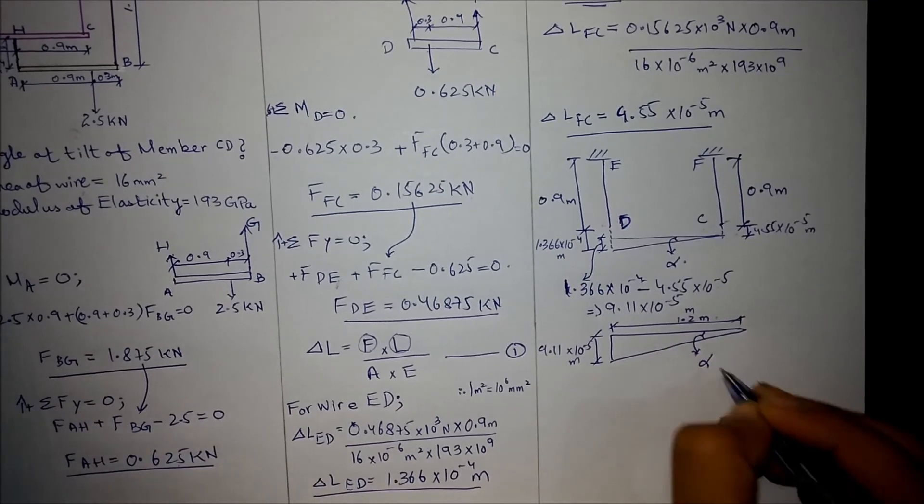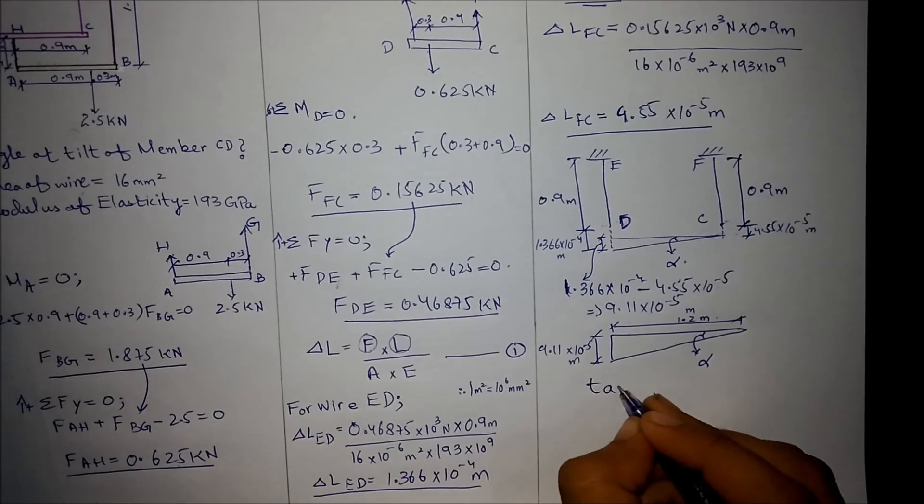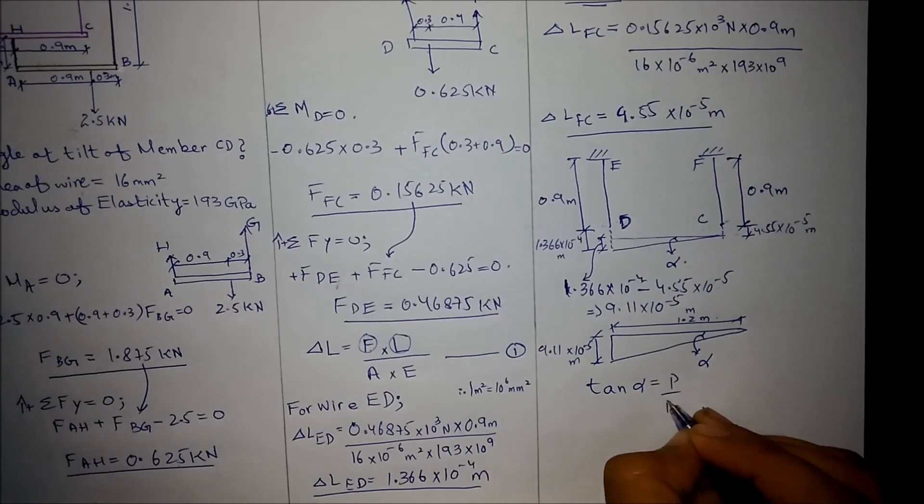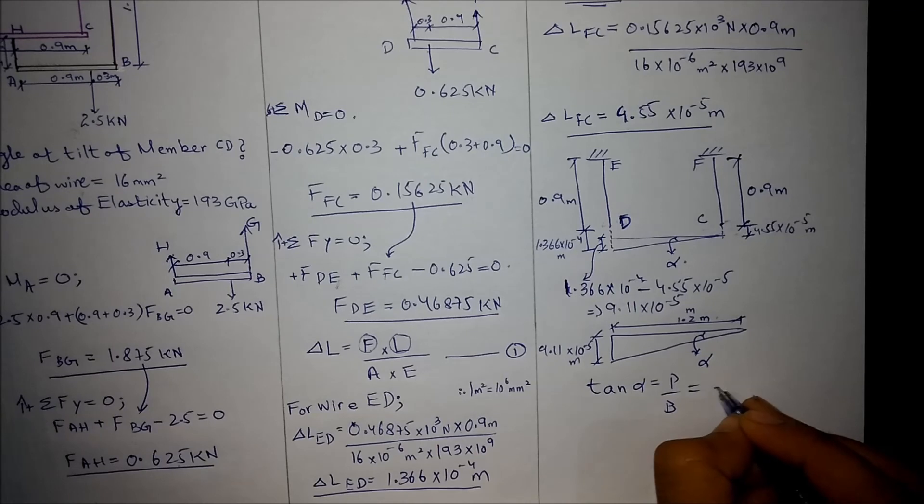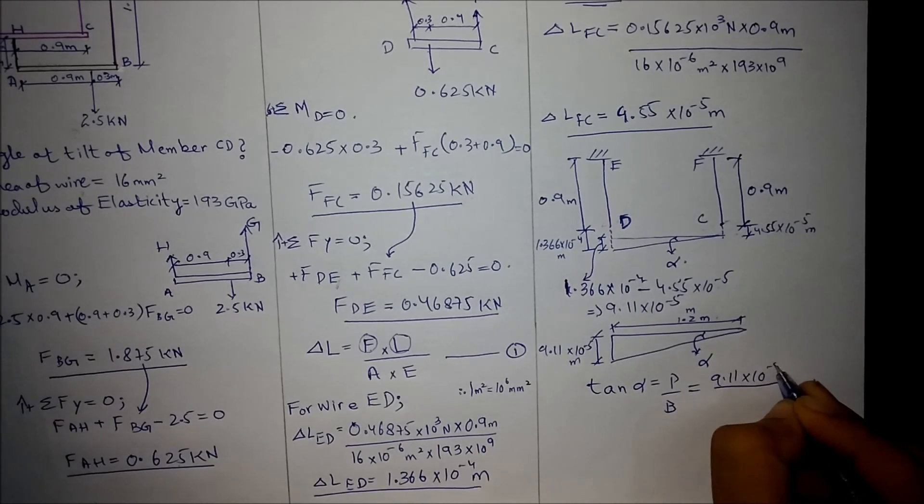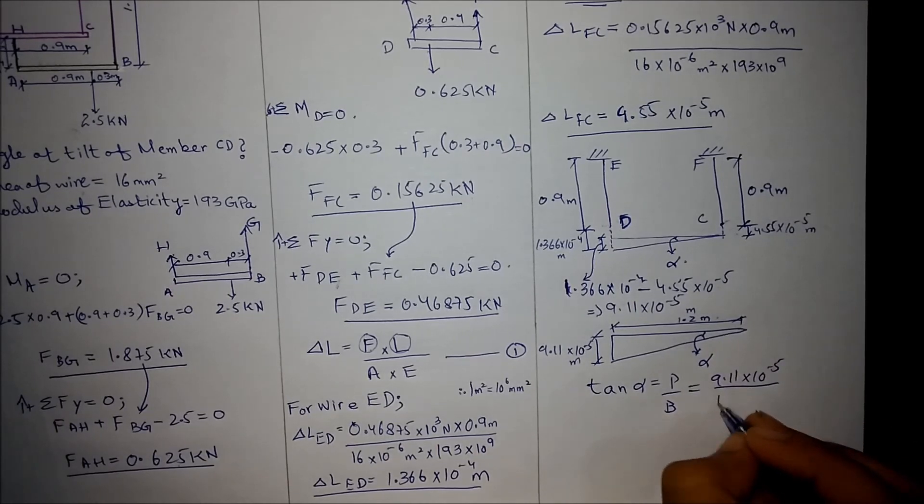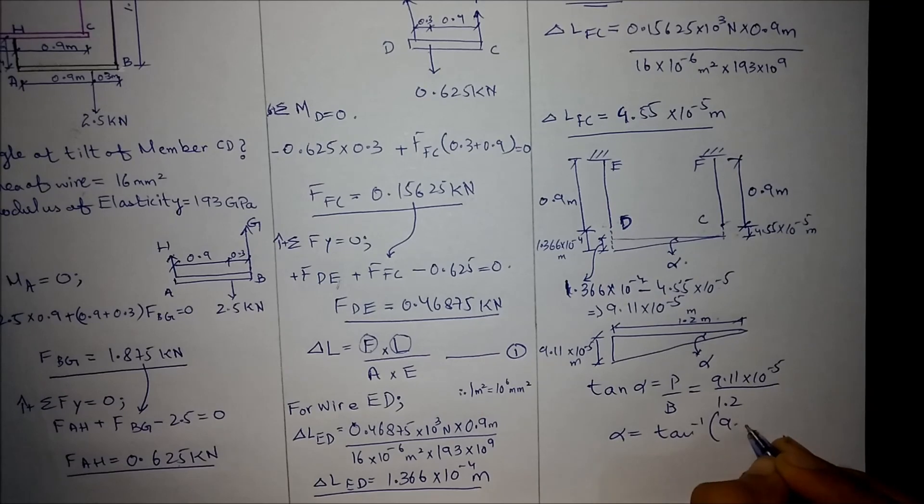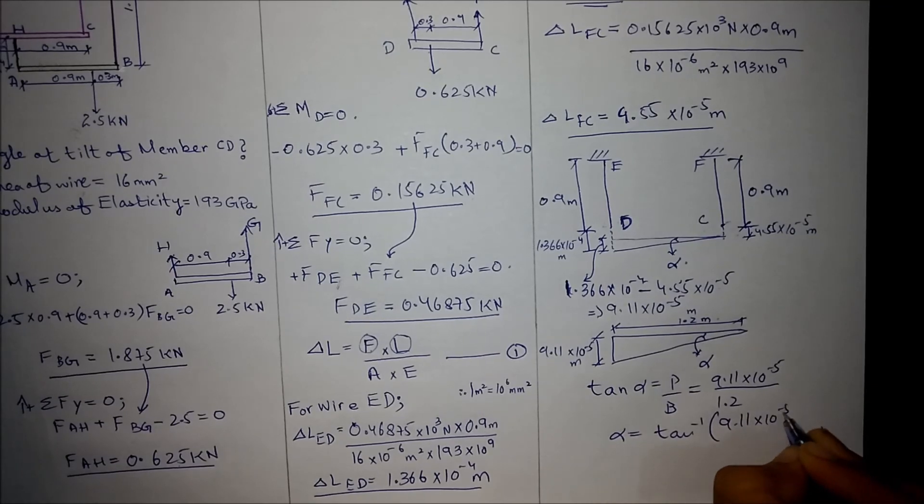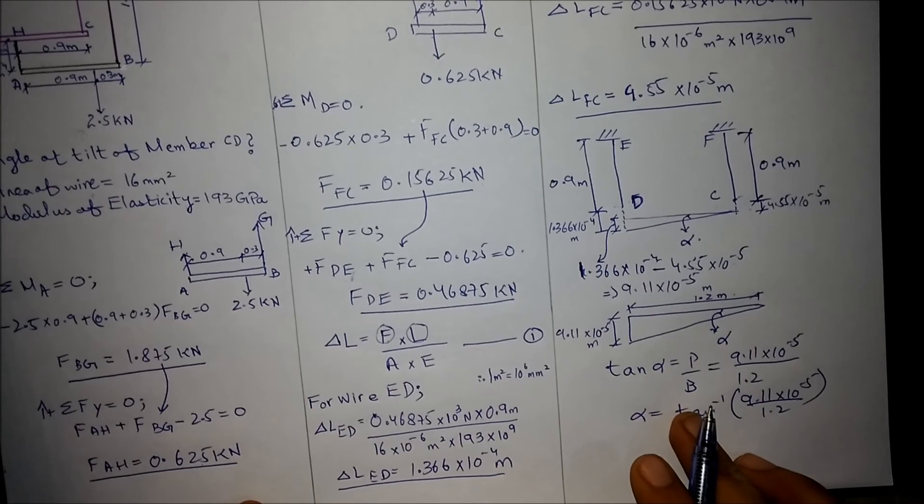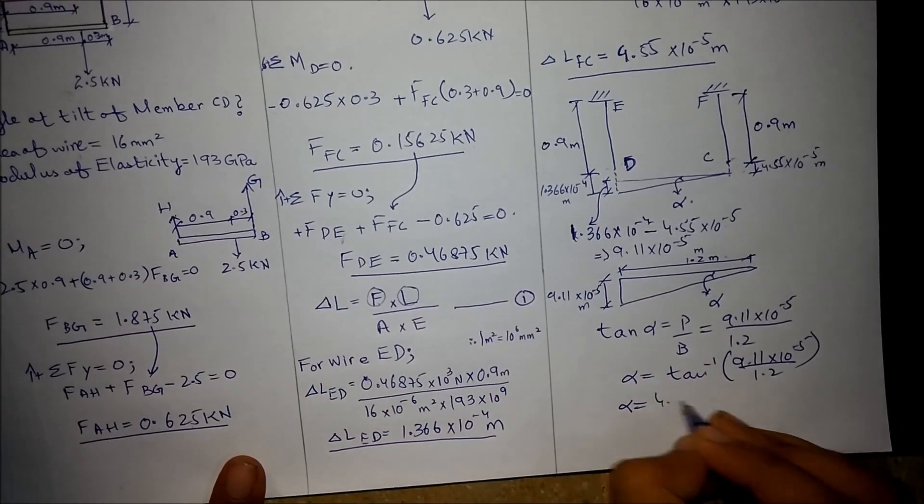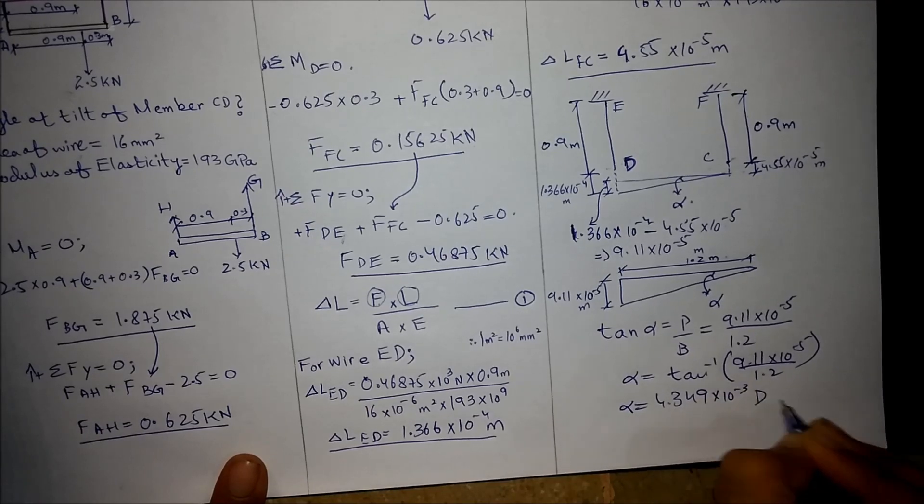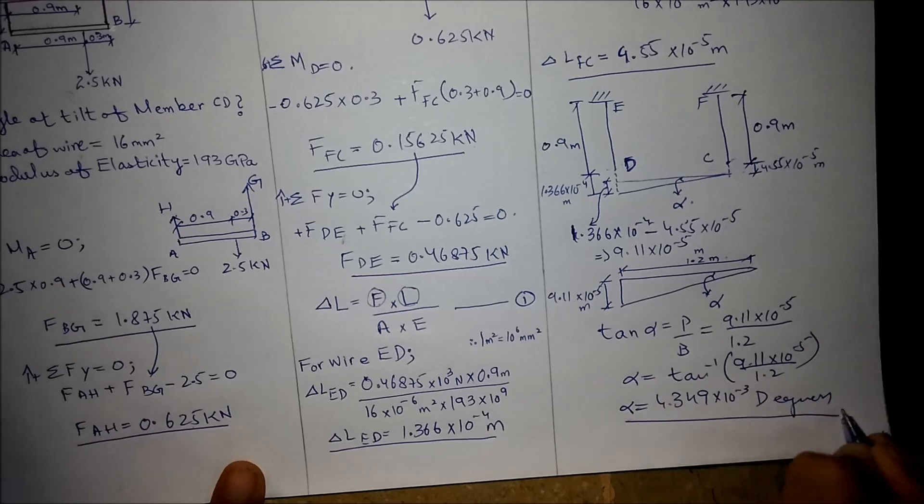Now tangent of alpha is equal to perpendicular over base. The perpendicular is 9.11 × 10⁻⁵ and the base is 1.2 meters. Alpha is equal to tangent inverse 9.11 × 10⁻⁵ over 1.2. Angle alpha comes out to be 4.349 × 10⁻³ degrees, which is our required answer.